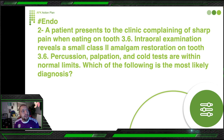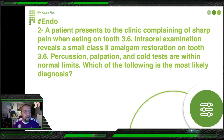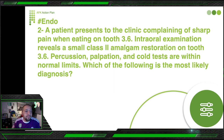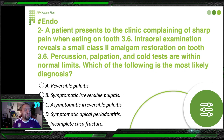Here's the problem — when you say short pain when eating, you think about palpation, percussion, maybe periodontal abscess or periapical abscess. But then the question tells you percussion and palpation are normal. How can the patient have short pain when eating? And to confuse you more, cold tests are within normal limits. So it's not pulpal, it's not periapical, but the patient has pain and this tooth has a cavity resolved with a small class 2 amalgam. Which of the following is the most likely diagnosis? Options include reversible pulpitis, symptomatic irreversible pulpitis, asymptomatic irreversible pulpitis, symptomatic apical periodontitis, and incomplete cusp fracture.